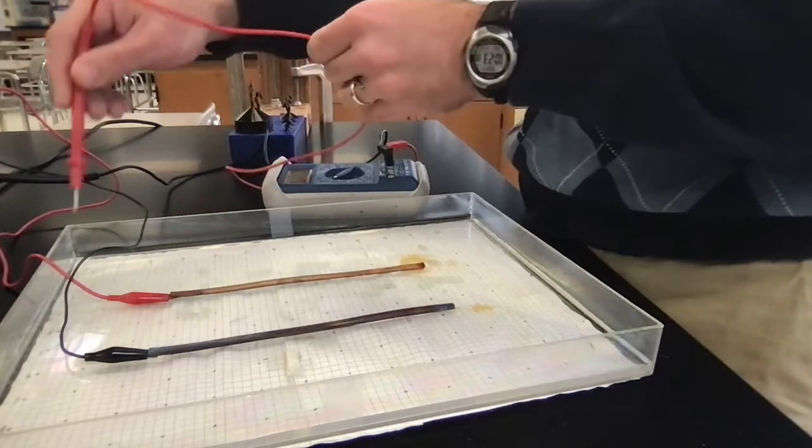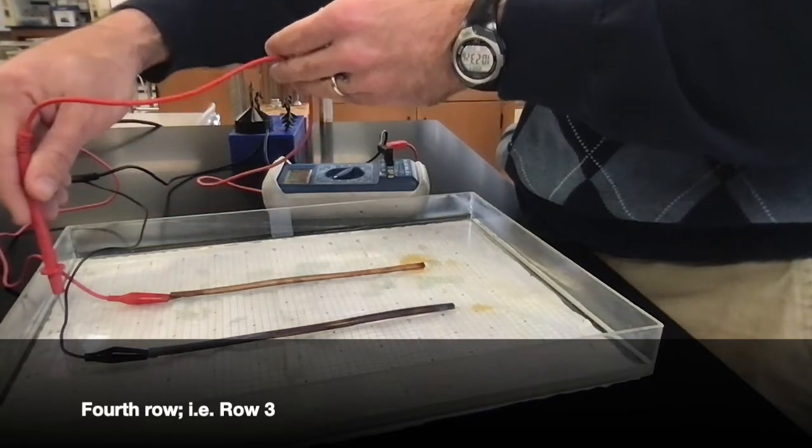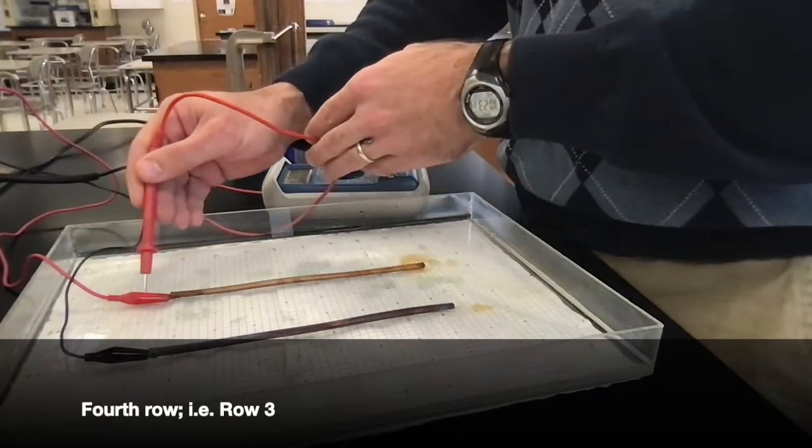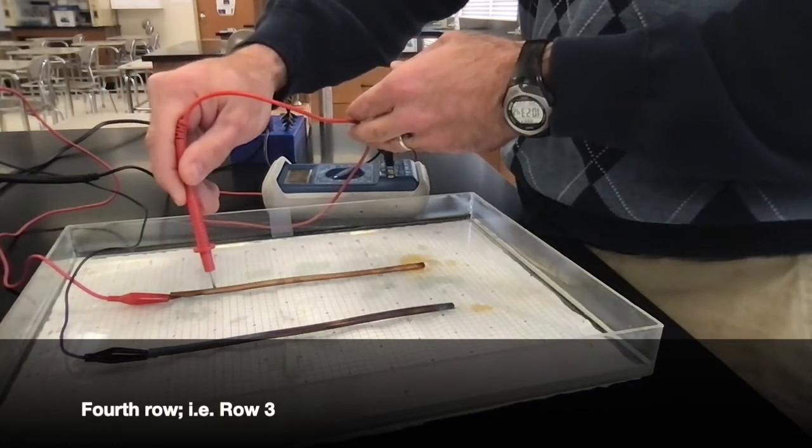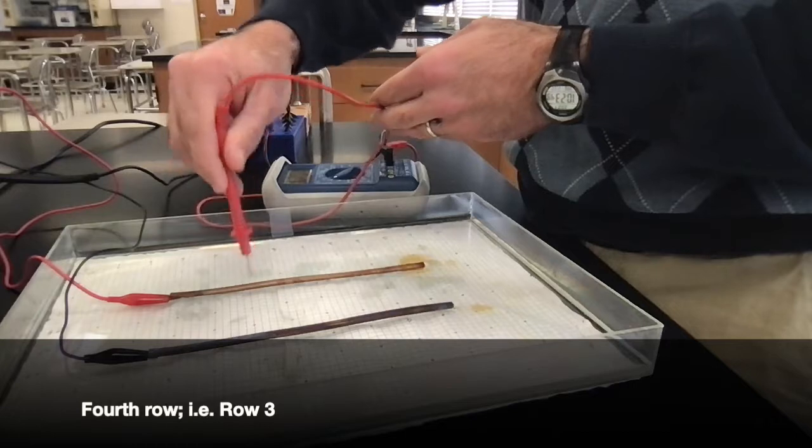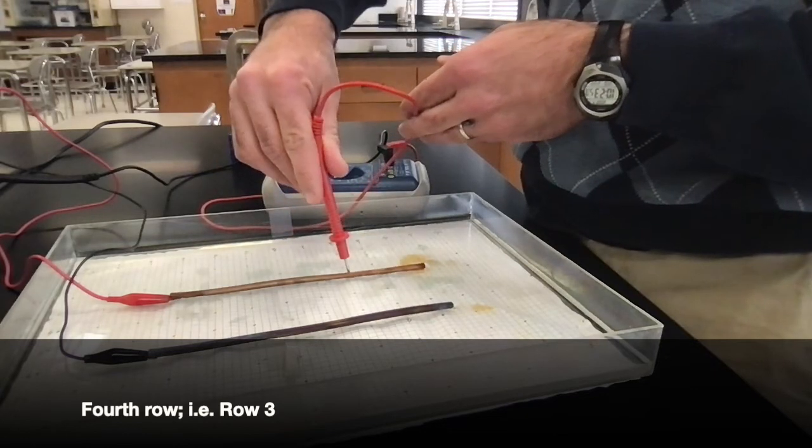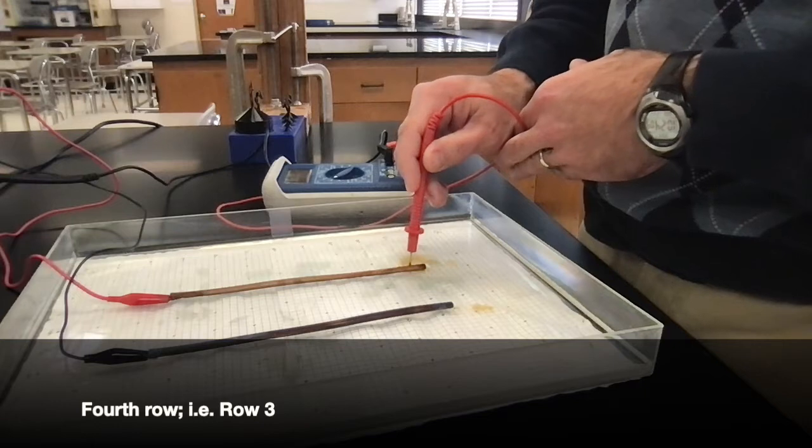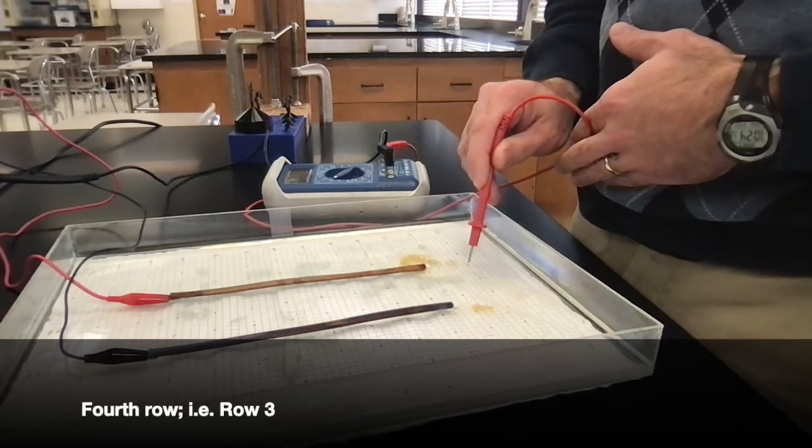Going down to row 3, the fourth row but labeled row 3. 6.6, 1 is 6.8, 2 is 8.3, 3 is 9.9, 4 is 10.2, 5 is 10.2, 6 is 10.2, 7 is 10.2, 8 is 10.2, 9 is 10.0, 10 is 10.1, 11 is 10.2, 12 is 8.1, 13 is 7.3.